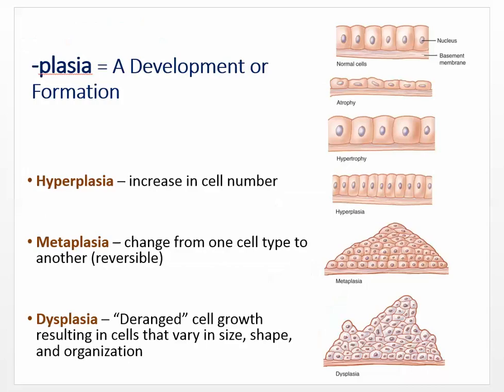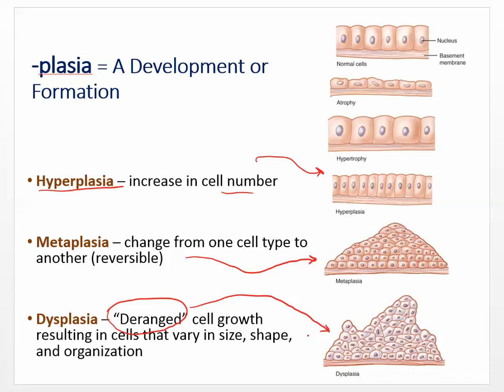Now let's talk about the plasias. From the word plastic — development or formation, a change of some sort. Hyperplasia is an increase in cell number. Metaplasia is a change from one cell type to another. And dysplasia is deranged cell growth — meaning the cells don't look like they're supposed to look. Dysplasia results in cells that vary in size, shape, and organization.